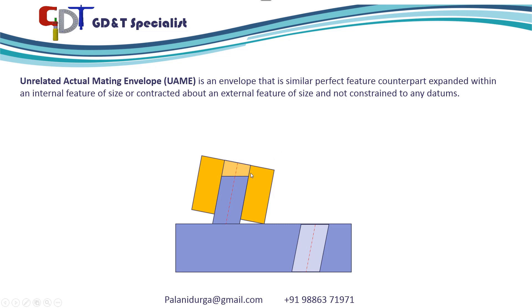This actual mating envelope is not taking the reference of the datum. So this envelope, which is not taking the datum reference, is called the unrelated actual mating envelope. This will give the axis of this boss.